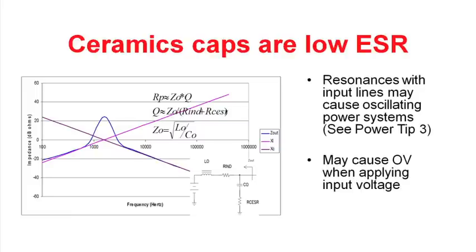The second issue that this high Q of these capacitors can cause is an over-voltage condition in the power supply when you first apply power. If you have a source — such as this source over here on the left of this diagram — and you abruptly apply this inductance to the source, you can create a surge on the output capacitor. And since this is very high Q, that surge can go to twice the input voltage, causing over-voltage conditions in your system and potentially resulting in damaged equipment.